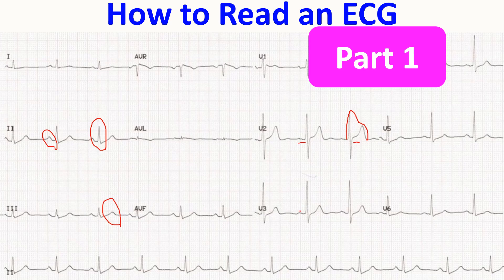From one P wave to another P wave — more precisely, from the onset of one P wave to the onset of the next P wave — that is the PP interval. From the onset of one QRS to the onset of the next QRS, that is the RR interval.